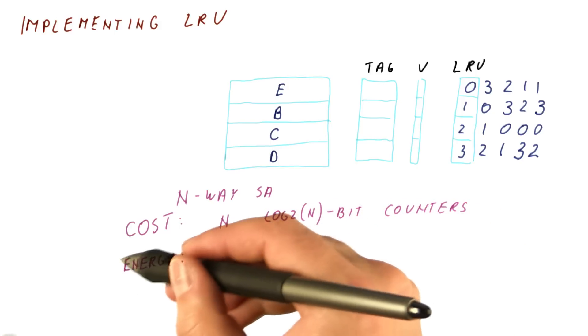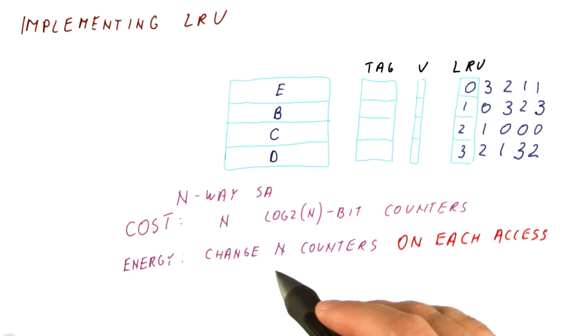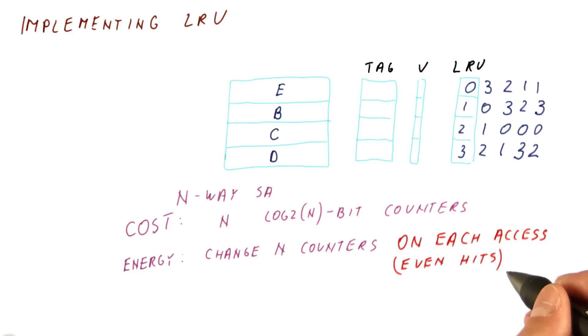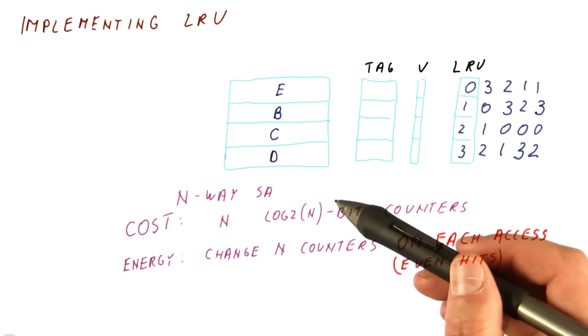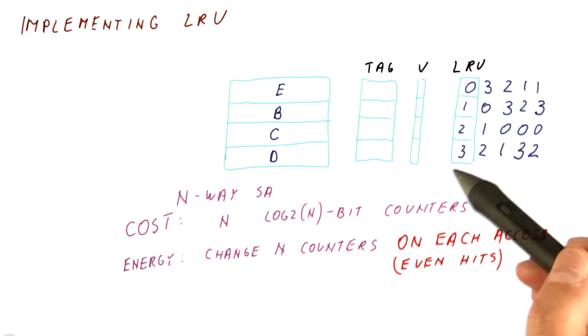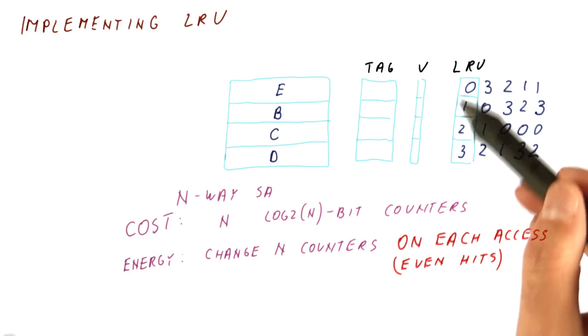Worse, there is an energy problem. We need to modify up to n counters on each access, even cache hits that can happen very frequently. So the LRU approximations try to keep fewer counters and do fewer updates on cache hits.